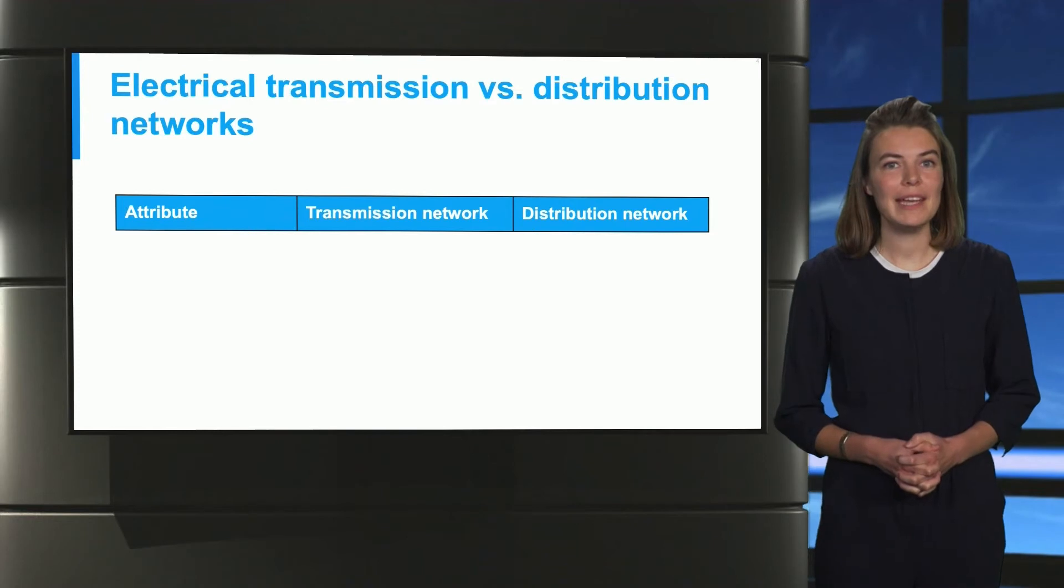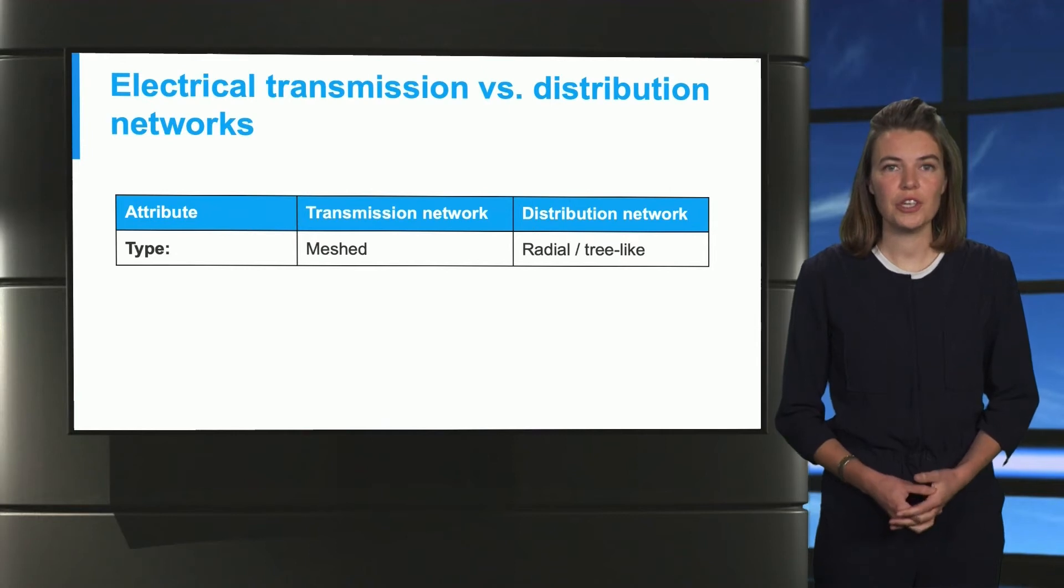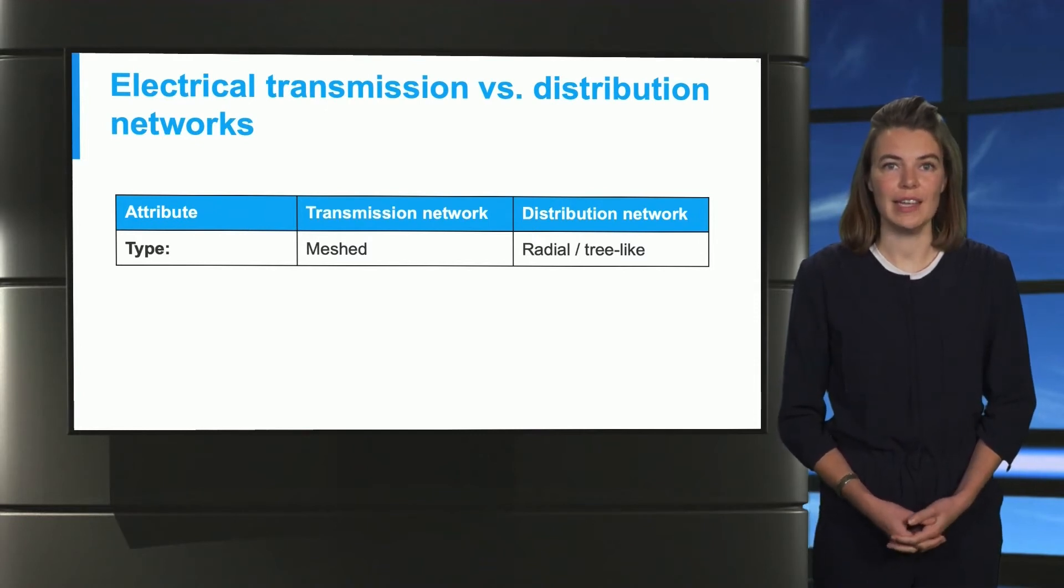Now let us focus on the main differences between these two networks. A transmission network has more of a mesh structure, which means that the cities through which the electricity flows are interconnected, ensuring reliability. On the other hand, the distribution network is more localized, for example the street or neighborhood of a particular city. Here you have one connection point and energy is stepped from this point and transported downstream. This is termed a radial or tree-like network structure.